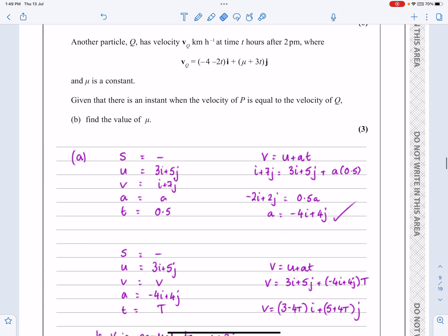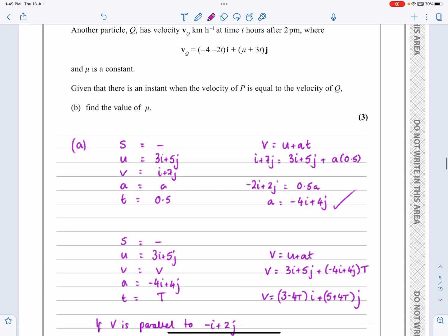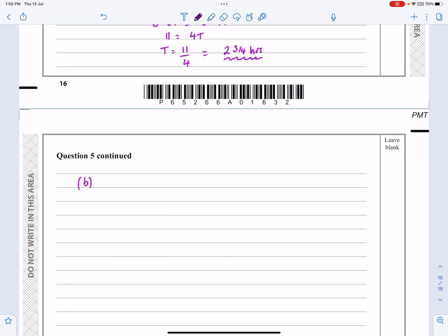And then part B. Part B says we've got another particle which has a velocity VQ given by this thing here, noticing that there's a mu in there so there's a variable in there. Given that there is an instant when velocity of P is equal to the velocity of Q, find the value of mu. Okay, so I'm going to let's get started with this. We had that VQ is given by minus 4 minus 2T I and mu plus 3T J.